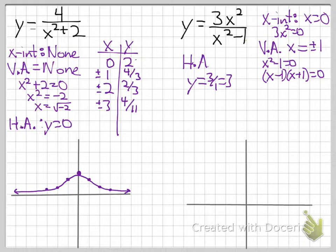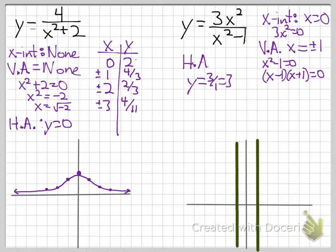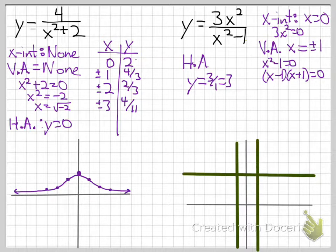We sketch vertical asymptotes at plus or minus 1, horizontal asymptote at y equals 3, and the x-intercept at 0. Now we need to plot some points.